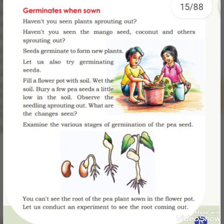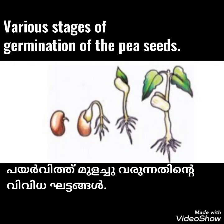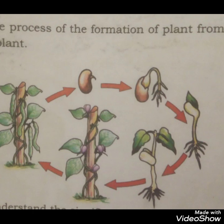Haven't you seen plants sprouting out? Seeds germinate to form new plants. Examine the various stages of the germination of the pea seeds — look at this picture carefully. We can see the various stages of formation of the pea seeds. Draw this picture in your notebook. This is the process of the formation of a plant from a seed, and a seed from a plant.